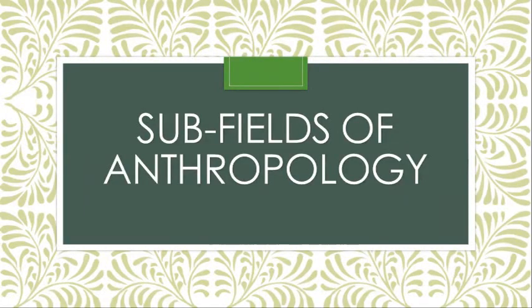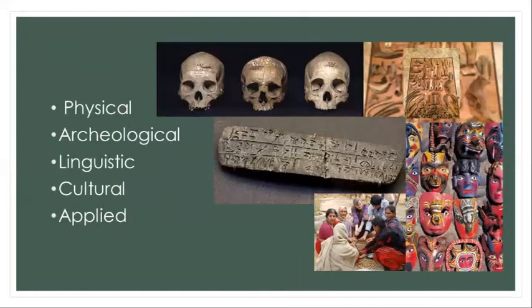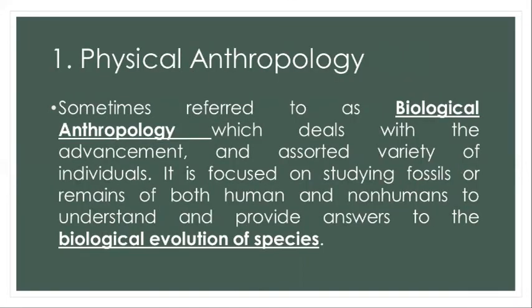What are the subfields of anthropology? We have physical anthropology, archaeological anthropology, linguistic anthropology, cultural anthropology, and applied anthropology. Physical anthropology, sometimes referred to as biological anthropology, deals with the advancements and variety of individuals. It is focused on studying fossils or remains of both human and non-humans to understand and provide answers to the biological evolution of species.